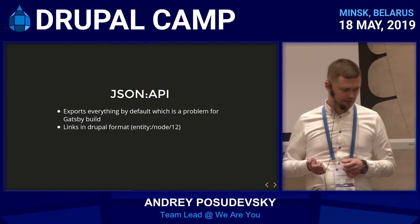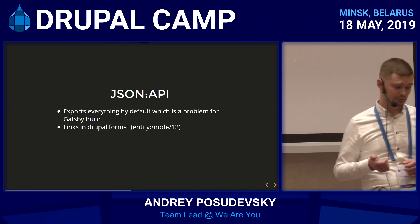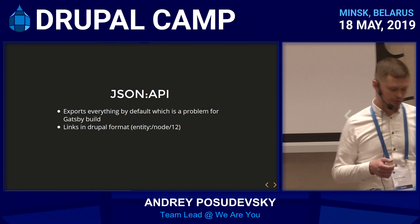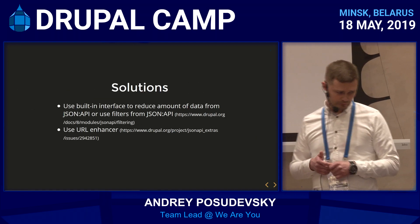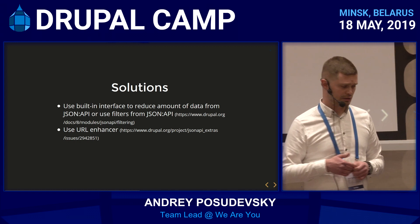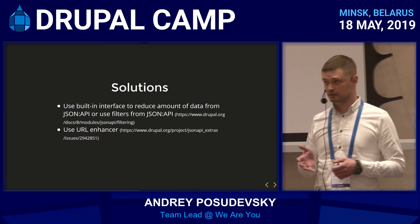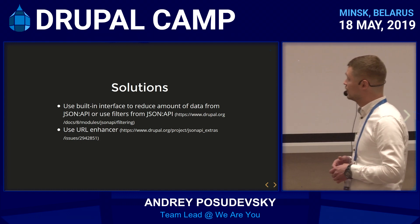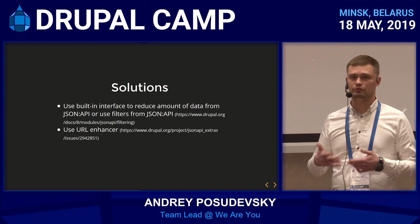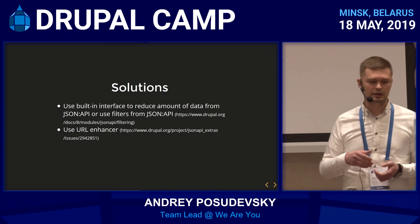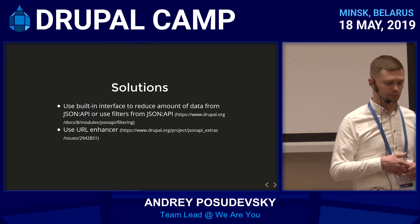The second problem is that links are exported in a Drupal format, which is not what Gatsby expects. Gatsby expects a full URL. How did we solve this? You can use the built-in interface to reduce the amount of data exported by JSON API. It will take less time to process, so gatsby-source-drupal doesn't have to go through all this unnecessary data during the build process.